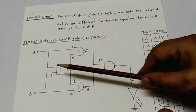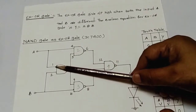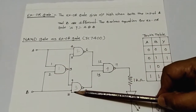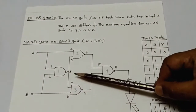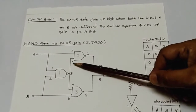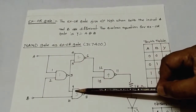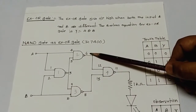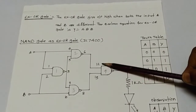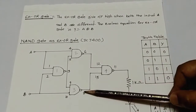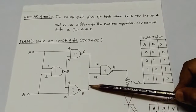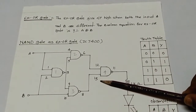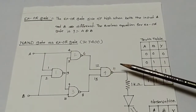Now see the 1st gate: pin number 1 is connected to the 2nd gate pin number 4. Pin number 2 of the 1st gate is connected to pin number 10 of the 3rd gate. Pin number 3 is connected to 2nd gate pin 5 and 3rd gate pin 9. The output of the 2nd gate, pin number 6, is connected to pin number 12 of the 4th gate. And the output of the 3rd gate, pin number 8, is connected to pin number 13 of the 4th gate. The 4th gate output is pin 11.